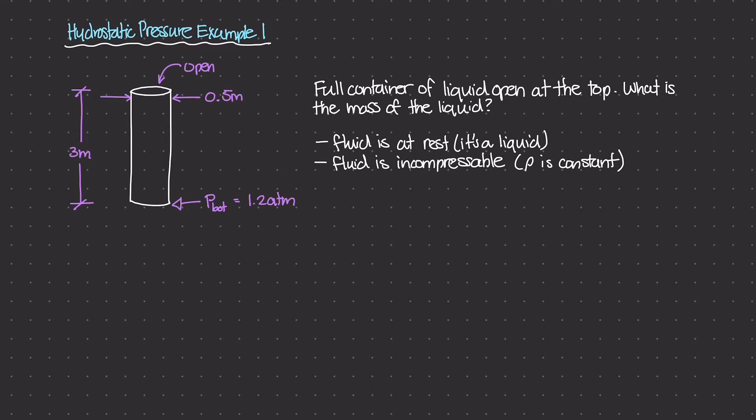So in this example, we have this container here, and it is 3 meters tall, and it has a diameter of 0.5 meters. So it's a cylindrical container, and it is open at the top. And inside of this container we have some sort of liquid. We don't know what kind of liquid it is, but we know that the liquid is filled all the way to the top. So this is a fully filled container of some liquid.